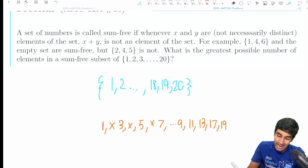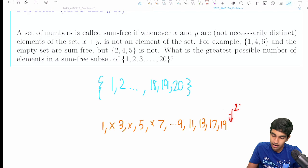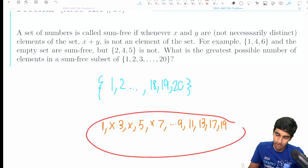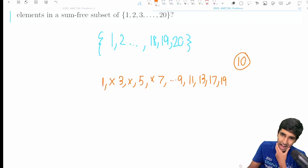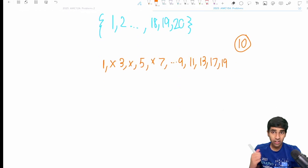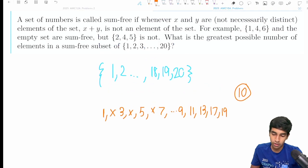The key thing is any even number can be represented as a sum of two of these odd numbers. So this gives us a construction for 10. This is not the only possible construction for 10.